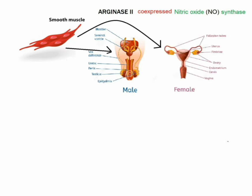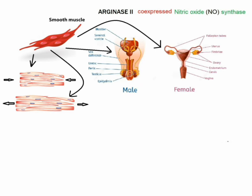Arginase 2 is co-expressed with nitric oxide synthase in smooth muscle tissue, such as the muscle in the genitals of men and women. The contraction and relaxation of these muscles has been attributed to NO synthase, which causes rapid relaxation of smooth muscle tissue and facilitates engorgement of tissue necessary for normal sexual response.